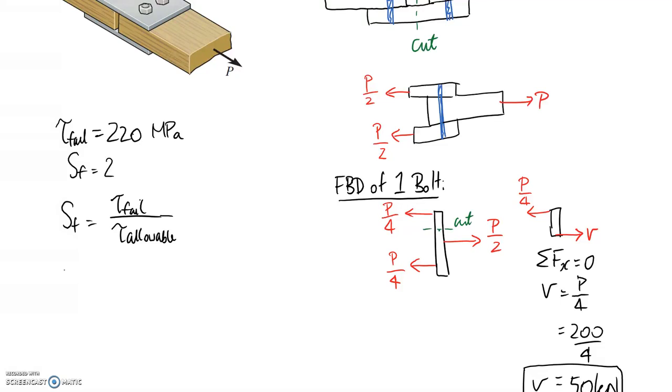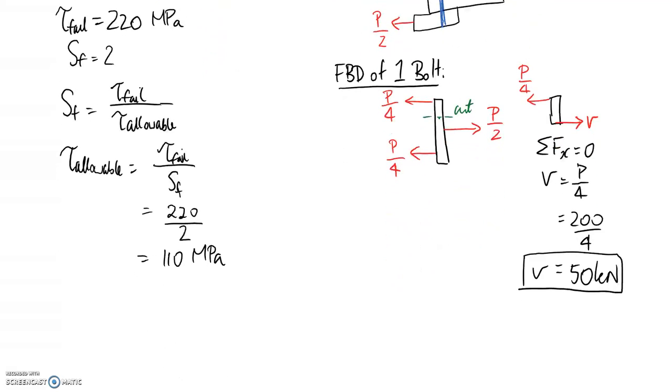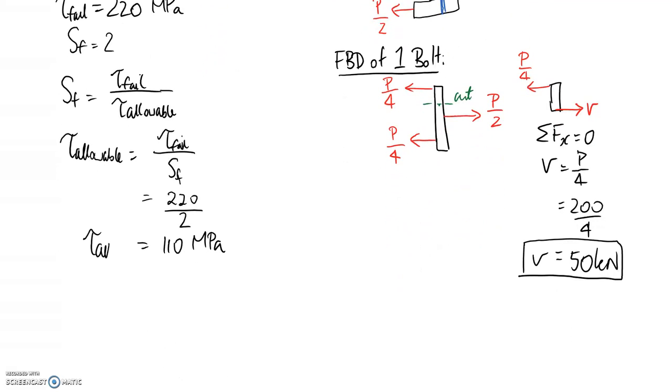Rearranging this and substituting in, it's going to be 220 divided by 2. So that means we're designing for a stress of 110 megapascals, so tau allowable.